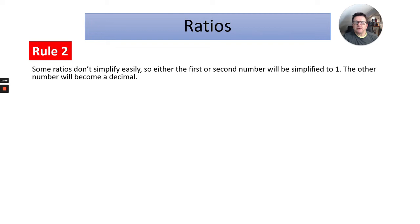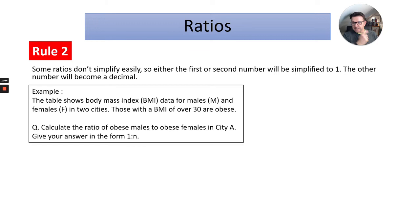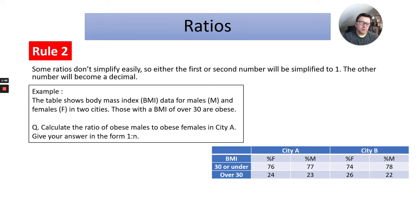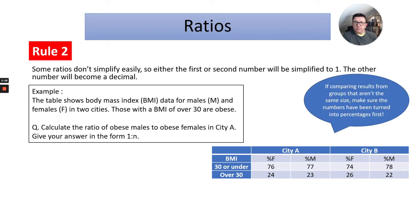Rule two: some ratios don't simplify easily. Either the first or second number will be simplified to one, and the other number will become a decimal. Here's a good example — we've got a table showing the body mass index data for males and females in two cities. Those with a BMI of over 30 are considered obese. The question says: calculate the ratio of obese males to obese females in city A. Give your answer in the form of one to N. The first thing to notice is that they have converted the values into percentages. If you're comparing results from groups that aren't the same size, make sure the numbers have been turned into percentages first so you can make a comparison.